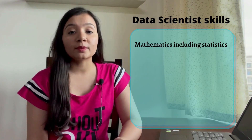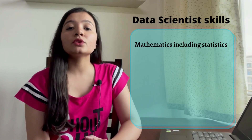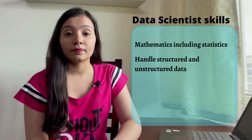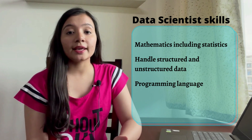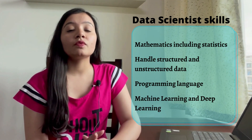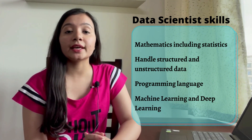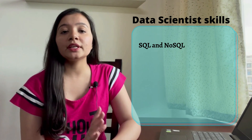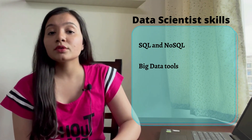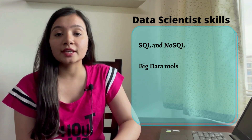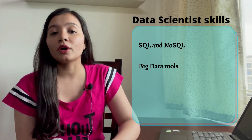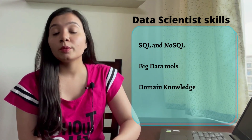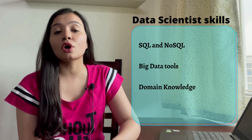The last one is the data scientist. Data scientists require knowledge of mathematics and statistics. They should be able to handle structured and unstructured data. In-depth knowledge of programming languages like Python or R. Well-versed in various machine learning and deep learning algorithms. They should also have knowledge of SQL and NoSQL, must be familiar with big data tools, and have a fair understanding of programming languages, databases and building data models. They also need domain knowledge, decision-making ability and soft skills.